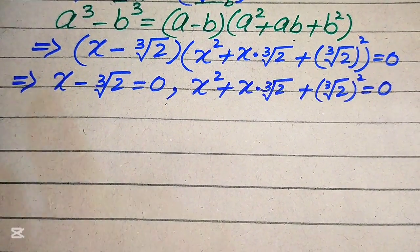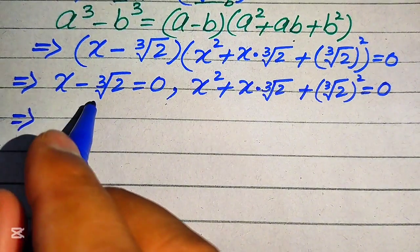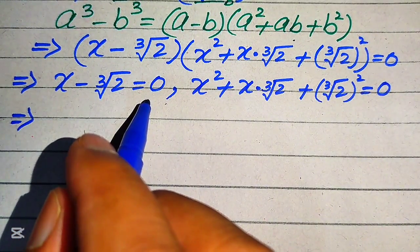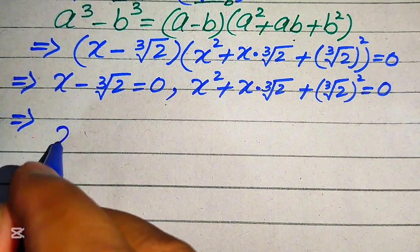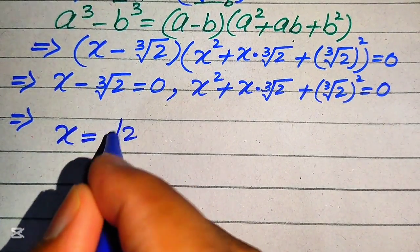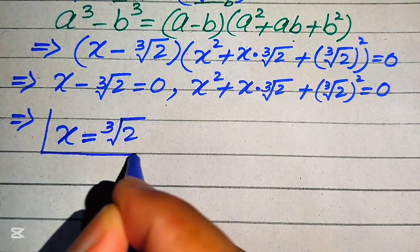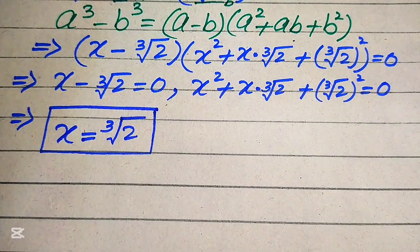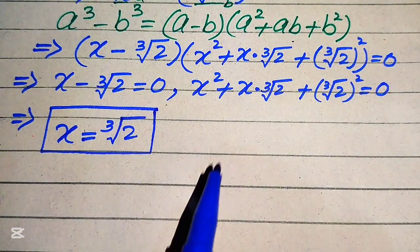Focusing on the first case: the cube root of 2 is a negative term on the left, so when moved to the right hand side it becomes positive. We get the first real value: x equals cube root of 2. This is our first real root of the given equation.